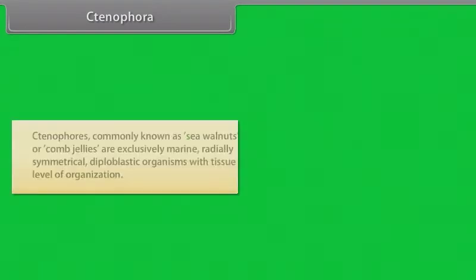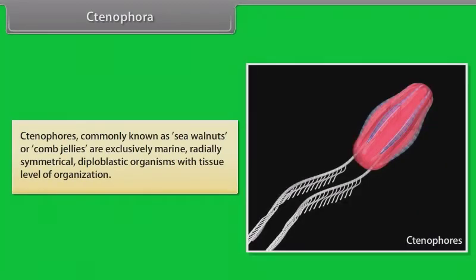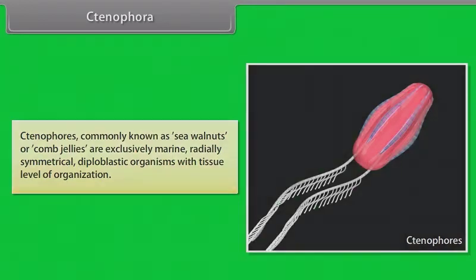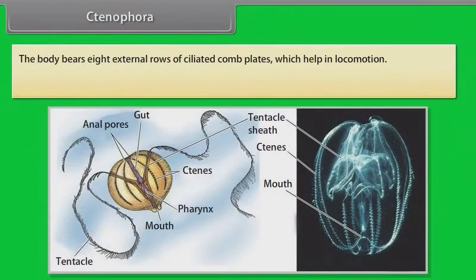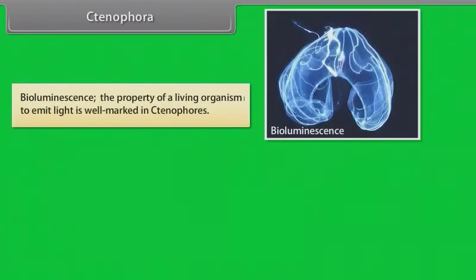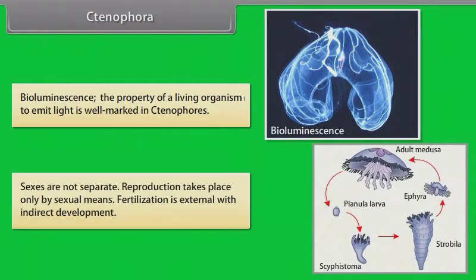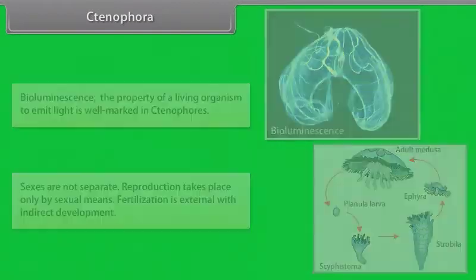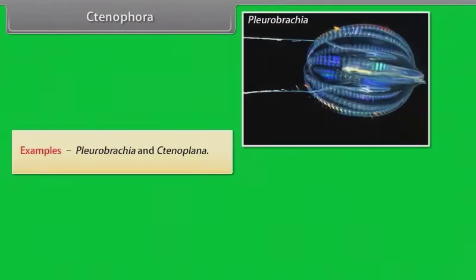Ctenophores, commonly known as sea walnuts or comb jellies, are exclusively marine, radially symmetrical, diploblastic organisms with tissue level of organization. The body bears eight external rows of ciliated comb plates which help in locomotion. Digestion is both extracellular and intracellular. Bioluminescence — the property of a living organism to emit light — is well marked in ctenophores. Sexes are not separate and reproduction takes place only by sexual means. Fertilization is external with indirect development. Examples: Pleurobrachia and Ctenoplana.